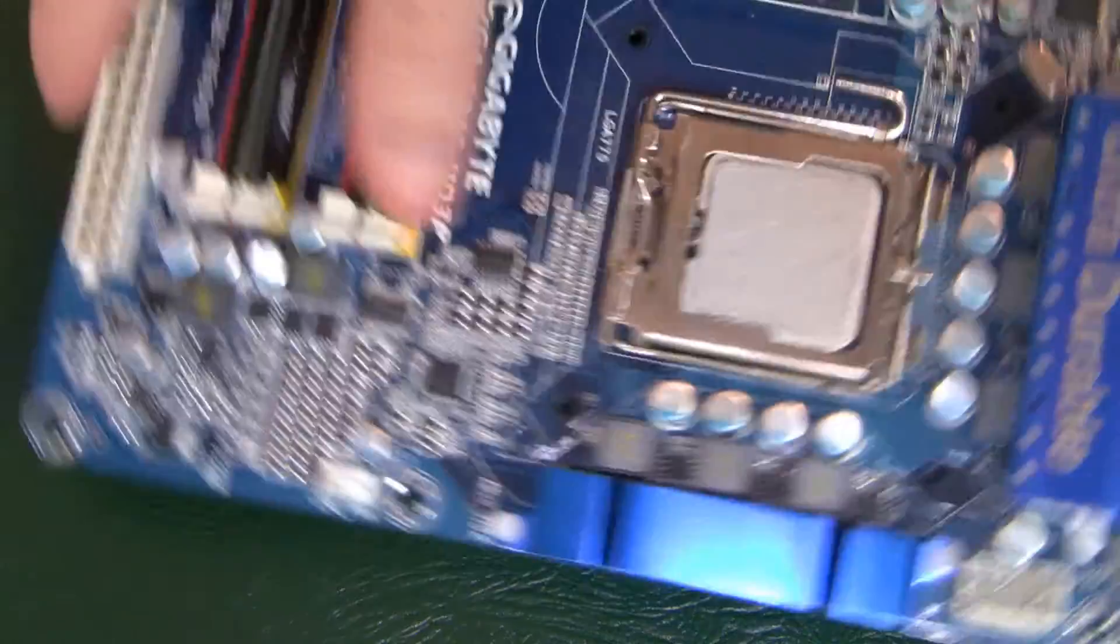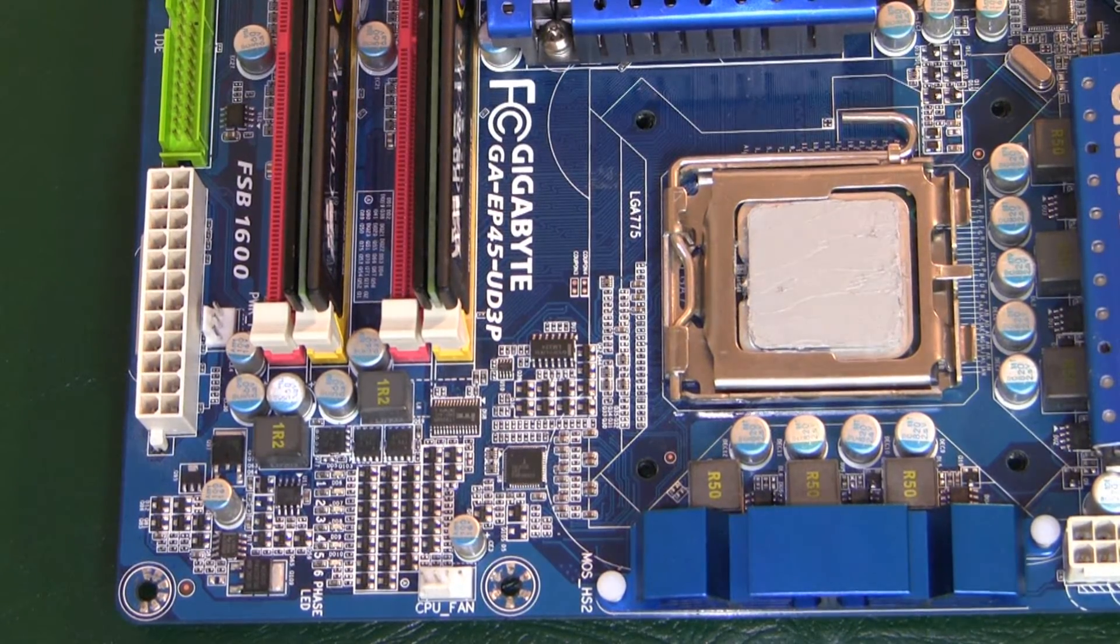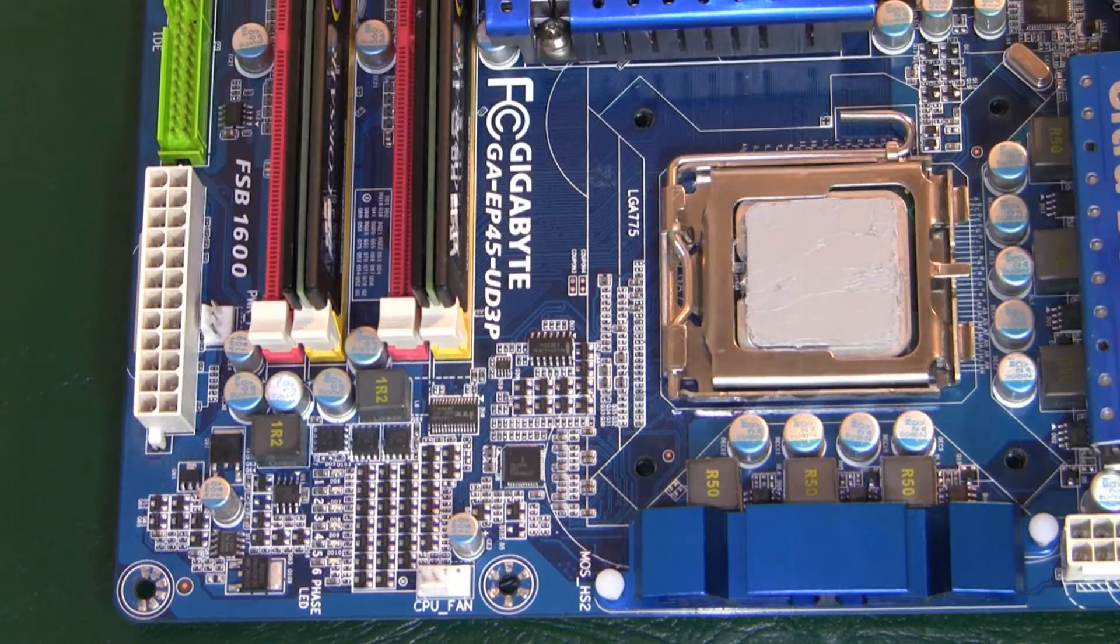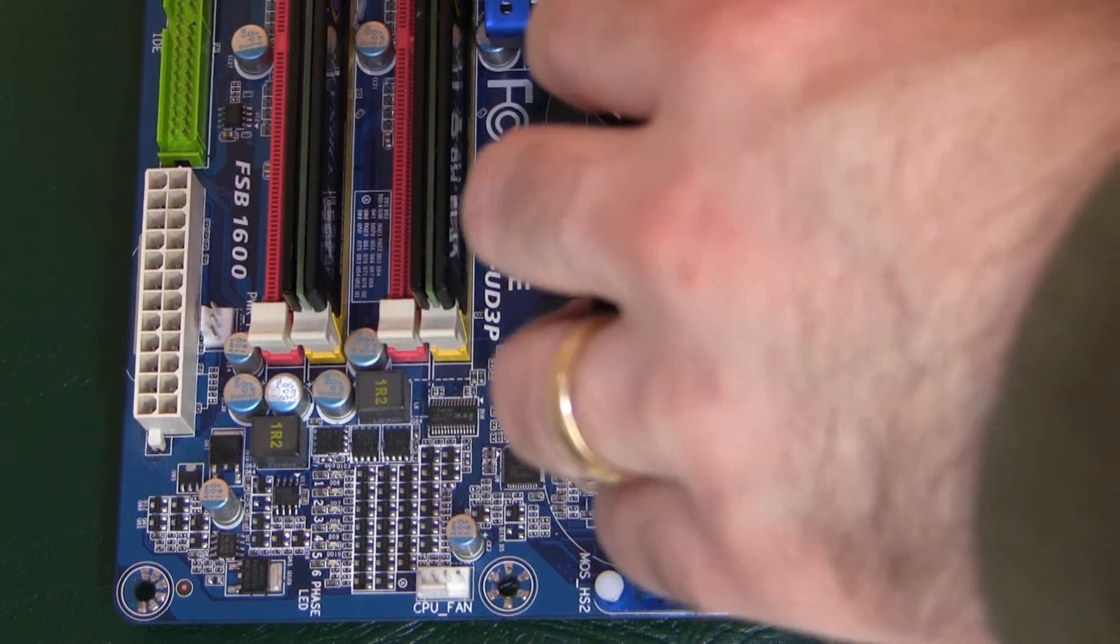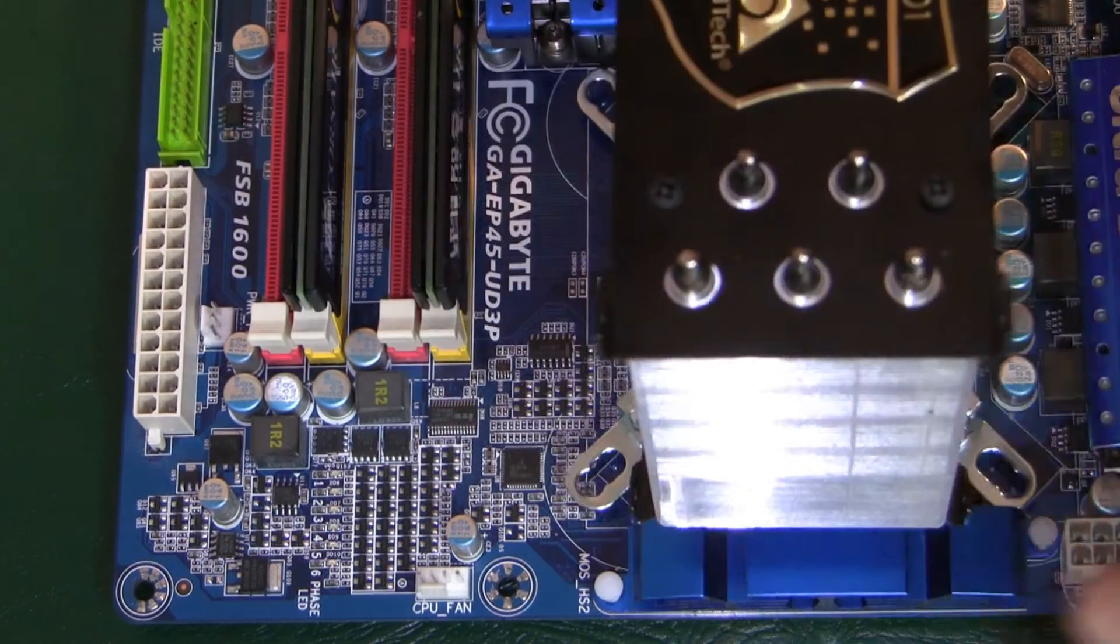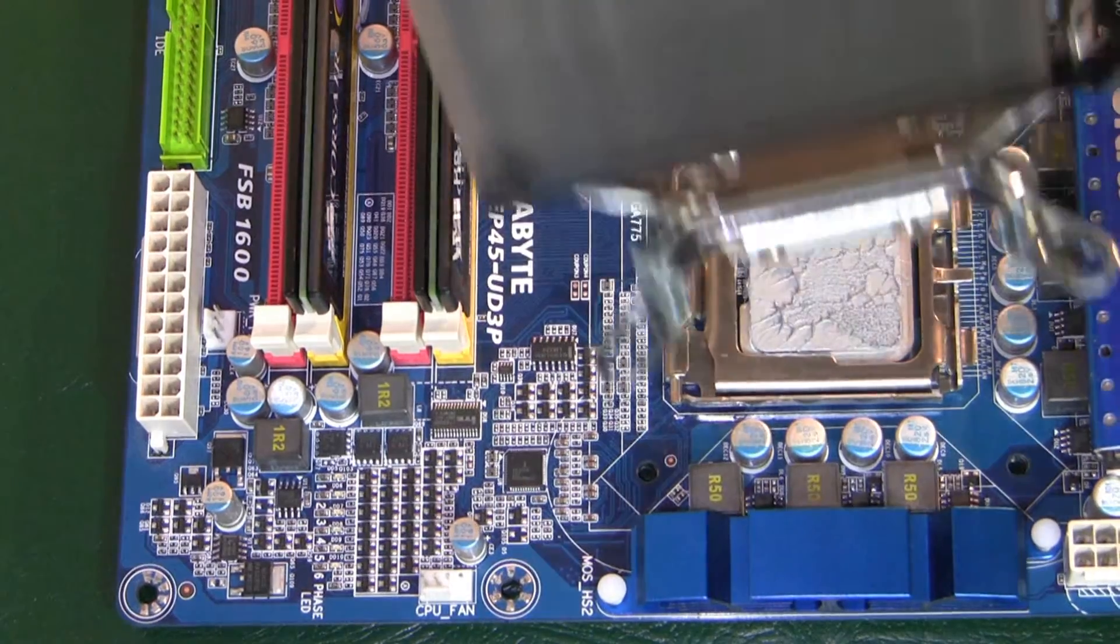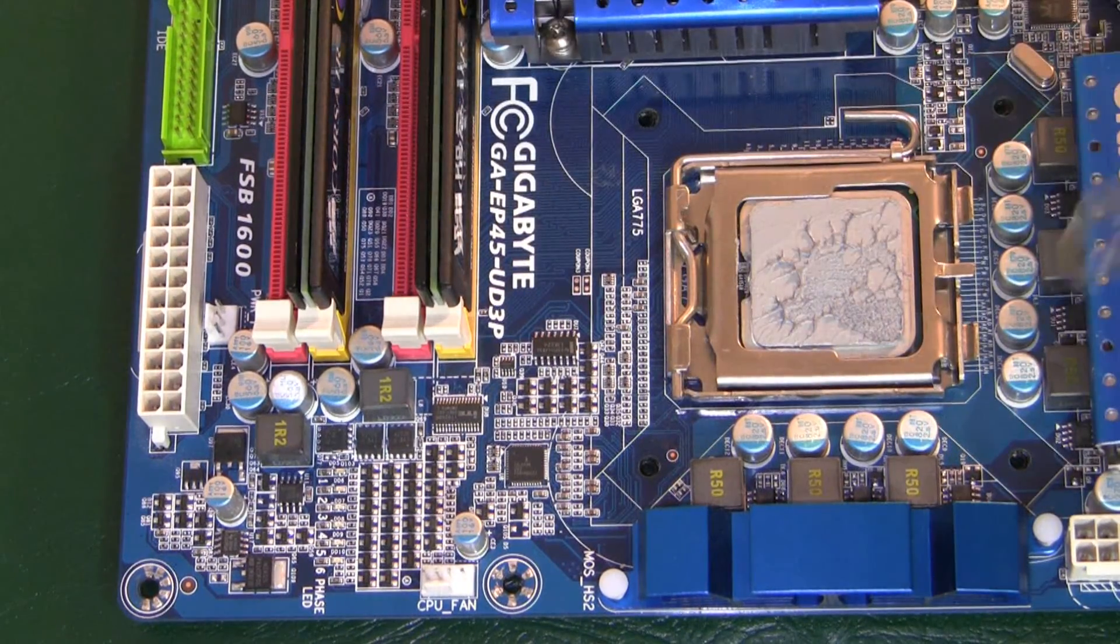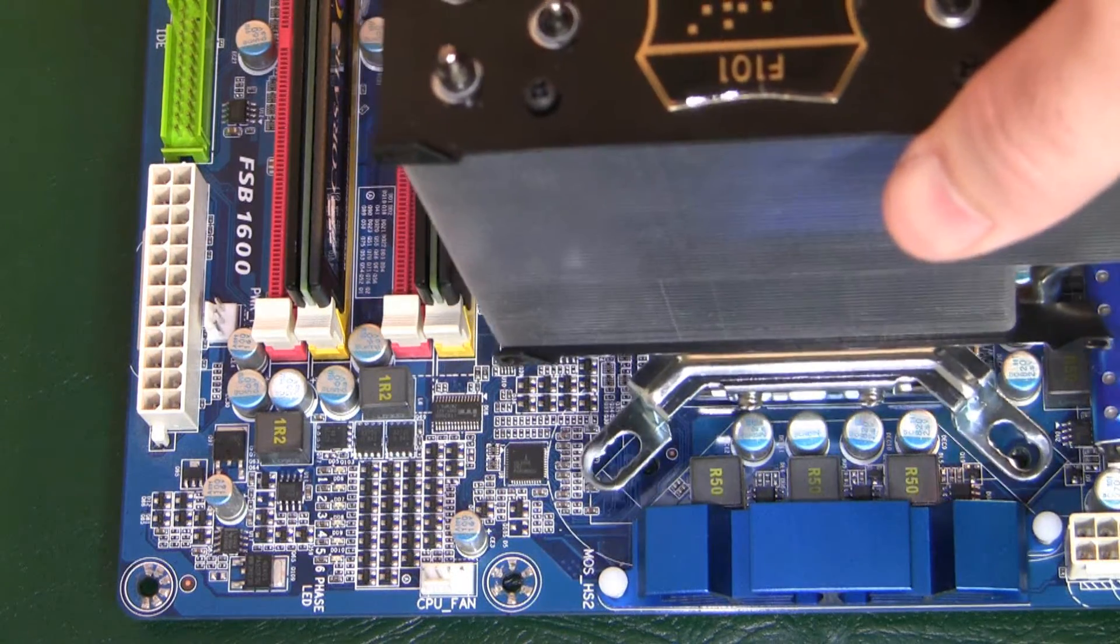Now it is time to install the CPU cooler onto the motherboard. There are a couple different ways that you can put this on. Just make sure that it fits. If you want it blowing out the back or out the top, either way.